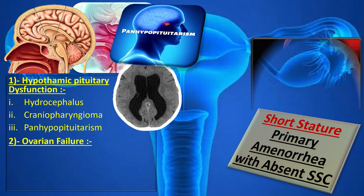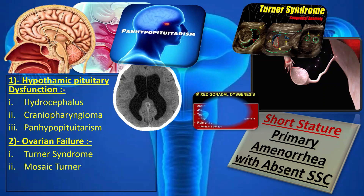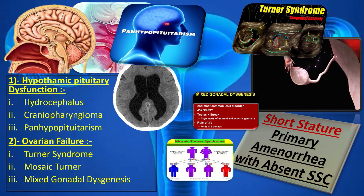Among patients with ovarian failure: Turner syndrome is managed by high-dose growth hormone and estrogen therapy. Mosaic Turner is treated with recombinant growth hormone at 0.375 mg per kg per week divided into seven once-daily doses, with or without oxandrolone. Mixed gonadal dysgenesis is managed by hormone replacement therapy and gonadectomy depending on the level of gonadal insufficiency.